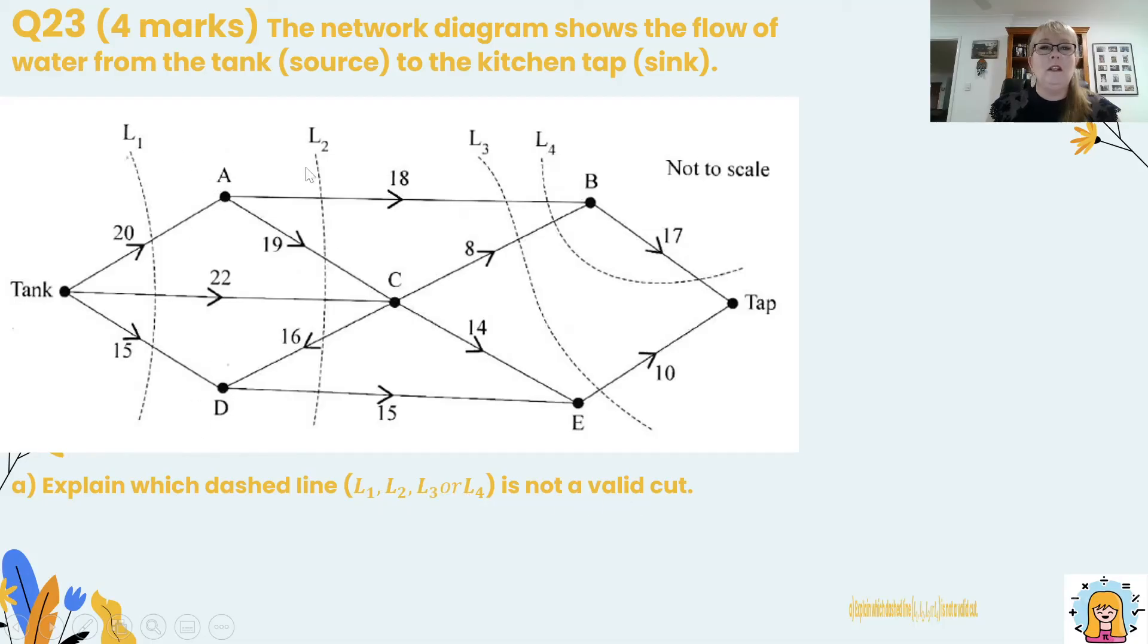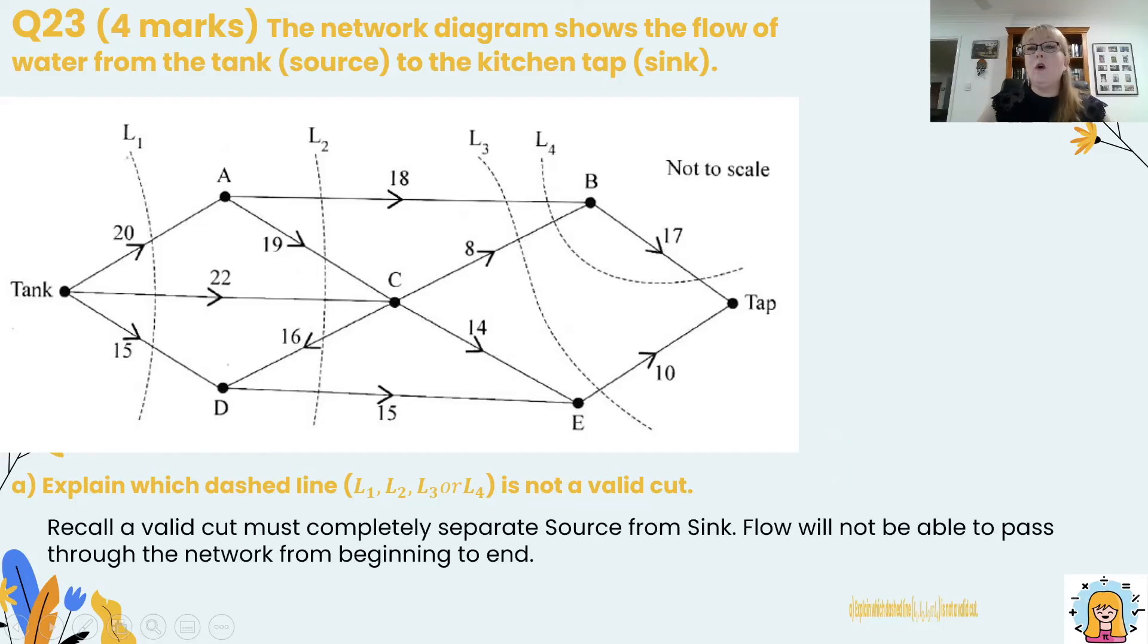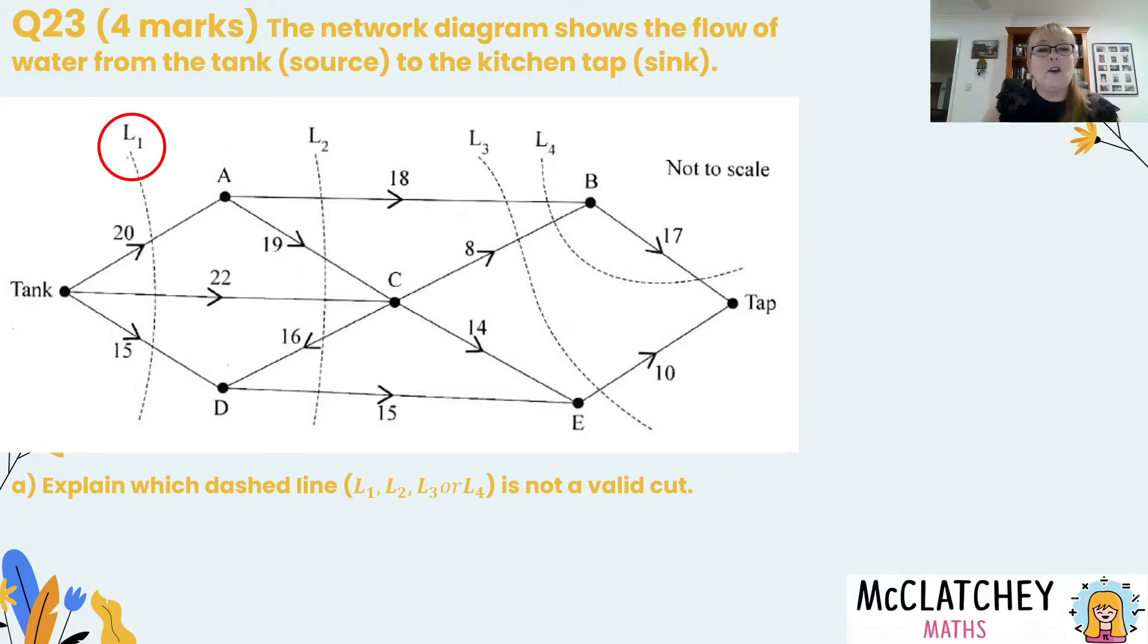Well you'd recall that for a valid cut to be taking place it must completely cut the source off from the sink. They must be completely separated from one another. Which means flow is not going to be able to pass through the network from the beginning to the end. So let's have a look at line one. Well line one it's a valid cut. It actually cuts off all of the lines coming out of the source. So no flow will go past that point. So it's valid. Let's look at L2. L2 also cuts everything off in the whole network.